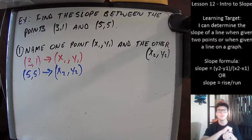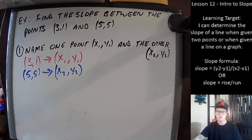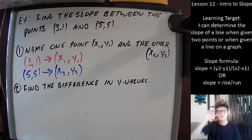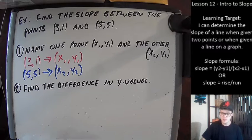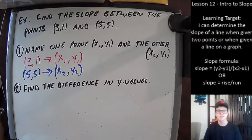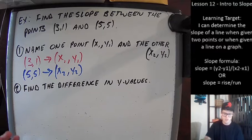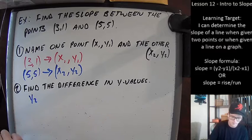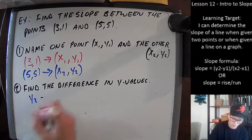Step two: we're going to find the difference in the y values. We're going to take the two y values, y₁ and y₂, and subtract them. Generally we do y₂ minus y₁.